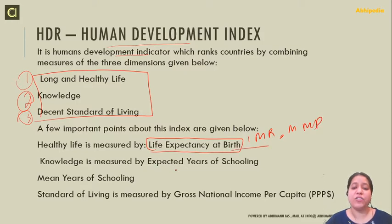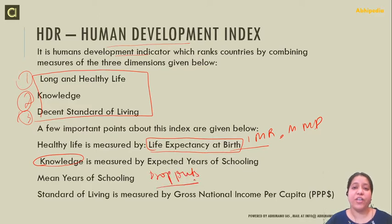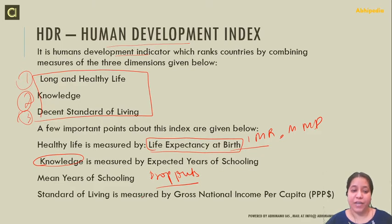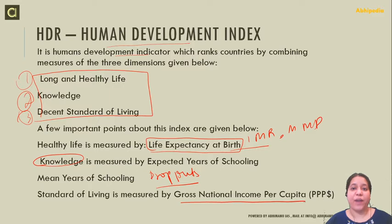Knowledge is measured by expected years of schooling and mean years of schooling. To improve the knowledge dimension, we need to ensure that dropout rates are lower so that we have a better Human Development Index. Standard of living is measured by gross national income per capita. As income rises and income inequality decreases, the standard of living will increase.